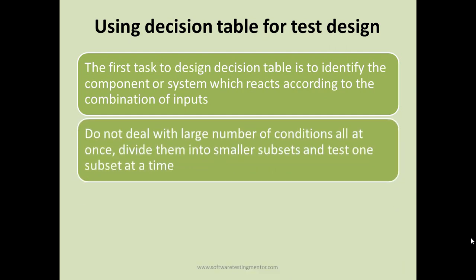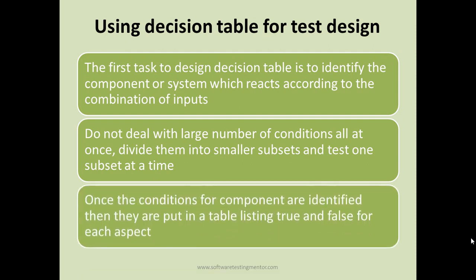Do not deal with a large number of conditions all at once. Divide them into smaller subsets of two to three conditions at a time and test one subset at a time. Otherwise you end up with hundreds of test cases, which is not feasible. Once the conditions for a component are identified, put them in a table, listing true or false for each, and test the output accordingly.